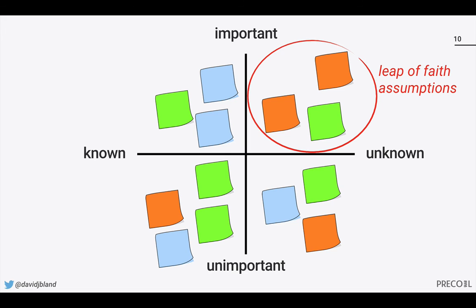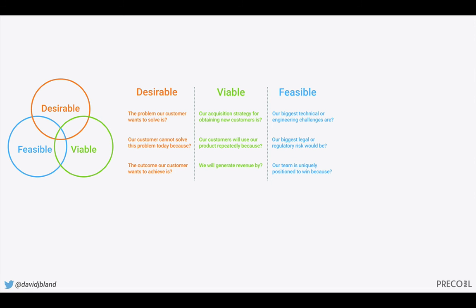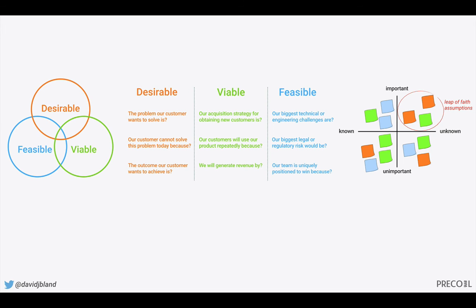And because you've color-coded these as desirable, viable, and feasible, you can see where you're making those assumptions even within those themes — giving you another level of insight into the lenses of assumptions you're making as a team. To recap: there are three types of assumptions in new product development — desirable, viable, and feasible. You need to unpack those into very specific questions around each theme, pull those out of your team, map them, and focus on the highly important yet unknown assumptions — your leap of faith assumptions — to guide your experimentation.